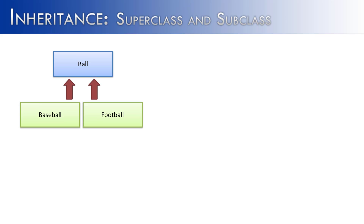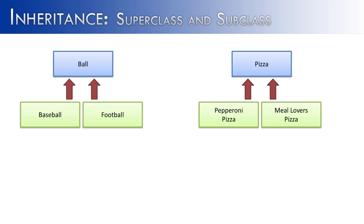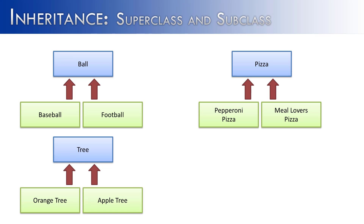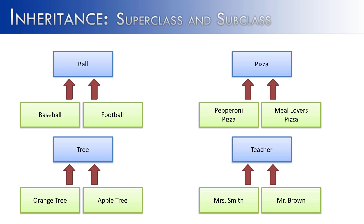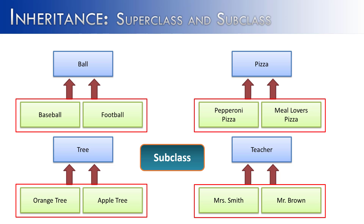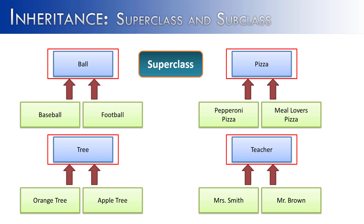Let's look at a few more examples. You could have a ball class, and then say a baseball is a ball or a football is a ball. Another example is pizza — a basic pizza that's just dough and cheese. You could transform it into a pepperoni pizza, where a pepperoni pizza is a pizza, or a meat lovers pizza is a pizza. We could look at trees: an orange tree is a tree and an apple tree is a tree. Or you could have a super class called teacher, and create specific types — Miss Smith is a teacher and Mr. Brown is a teacher. All the classes in green at the bottom are subclasses, and all the blue classes at the top are super classes.